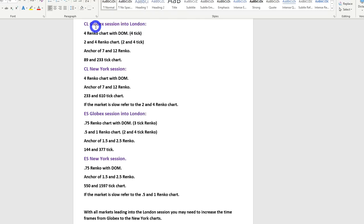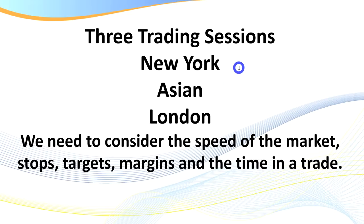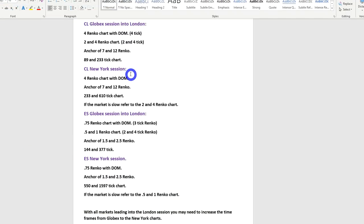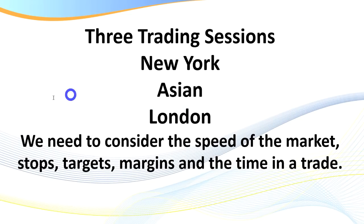The timeframes shown are specifically for CL and ES, and it's important to have what we call an entry chart and an anchor chart. We also need to consider the three trading sessions: New York has the most volume for stocks and futures; London is the largest for Forex. The market speed changes — New York really pumps, slows way down for the Asian session, then picks back up for London — so we need different timeframes for each session.